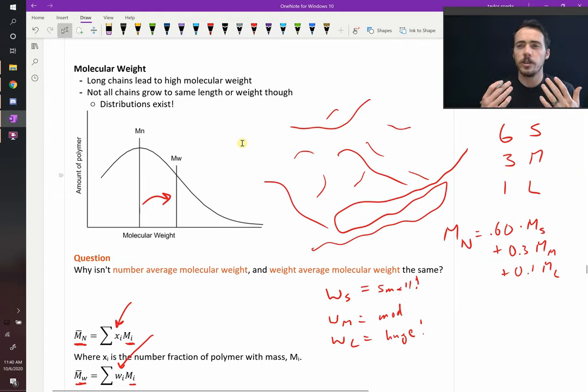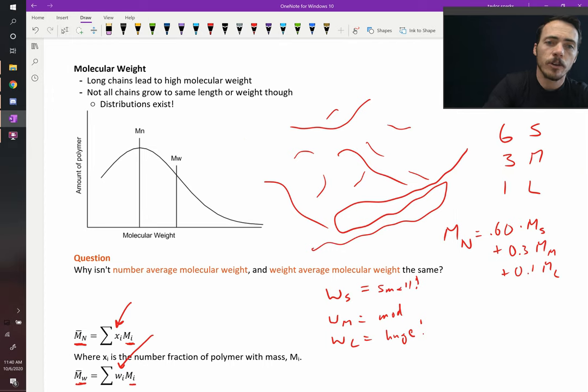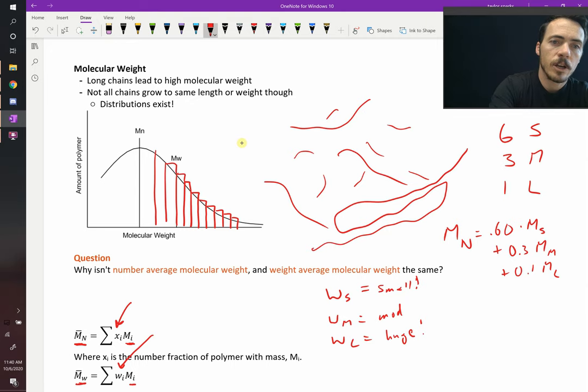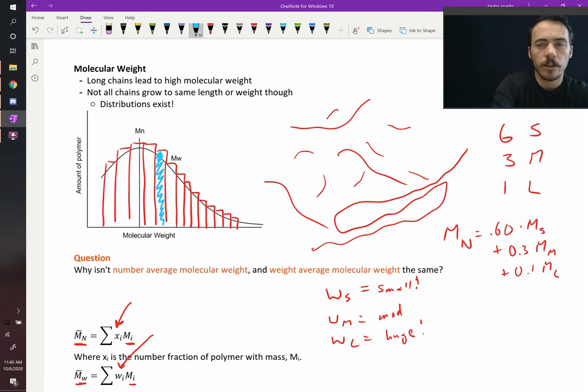And again, in practice when you do this, we don't know the weight and length of every single chain. Instead, what we have are tools that can tell us buckets. We can say, well, we can scan every, maybe, every order of magnitude of molecular weight we can take and we can create these buckets. And then you could say how much of the polymer corresponds to each one of these buckets. You could say that the overall weight fraction coming from this category is 5% or 10%, therefore you could plug